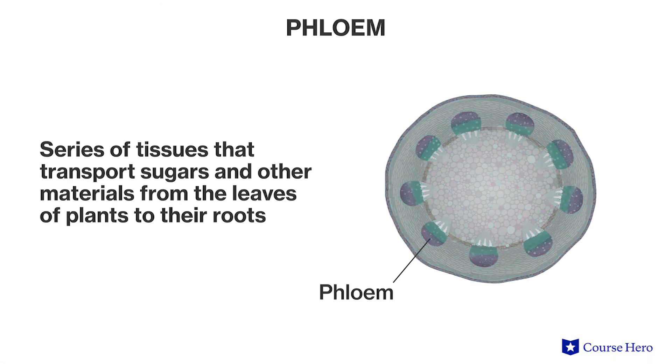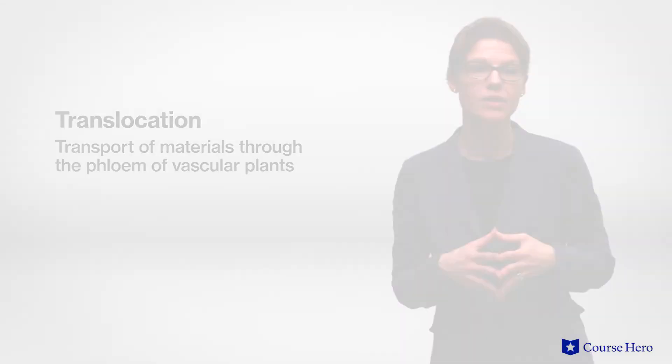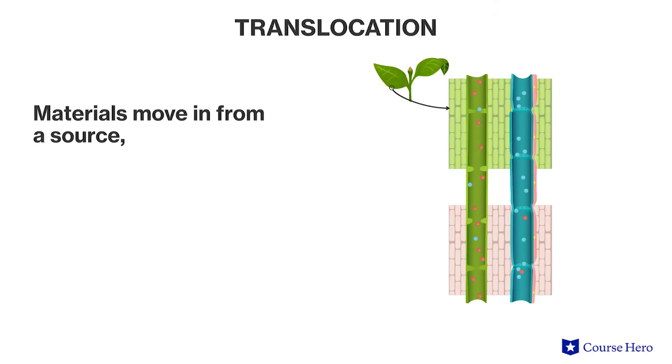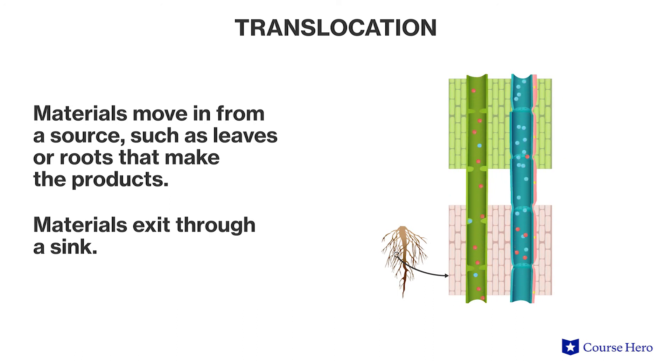Because photosynthesis takes place in the leaves and glucose is stored in the roots, there needs to be a mechanism in place to transport glucose back down the plant from the leaves to the roots. This is performed by the phloem; the newly created sugars diffuse into the nearest phloem tubes. The transport of materials through the phloem of vascular plants is called translocation, and phloem sap is the product being moved. These materials move from a source — the location in plants where the synthesized materials originate, such as leaves or roots that make the products — to a sink, the location where the synthesized materials are transported, such as the roots, fruits, or flowers, where the products are consumed. Like water moving into the xylem, the sugars in the phloem move through two main pathways, apoplastic and symplastic. Once the sugars reach the sink, they are moved into the surrounding tissues for storage and maintenance.